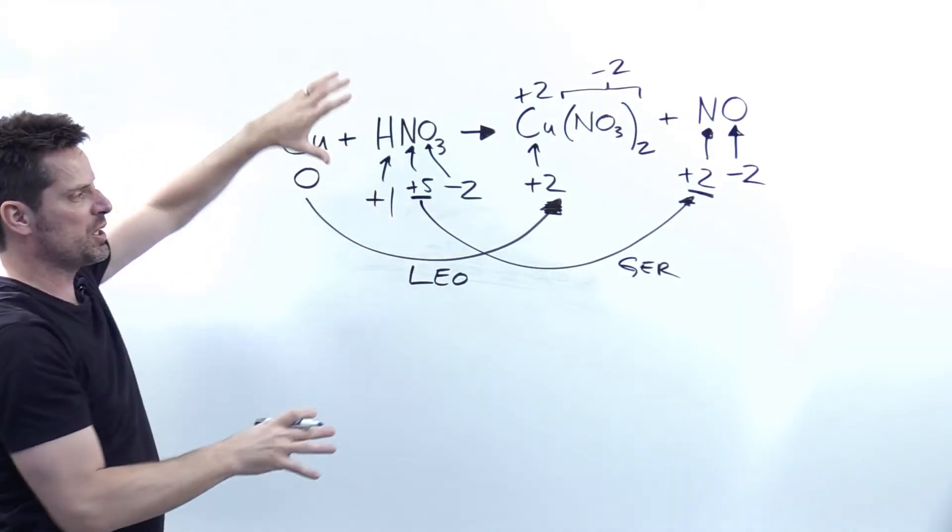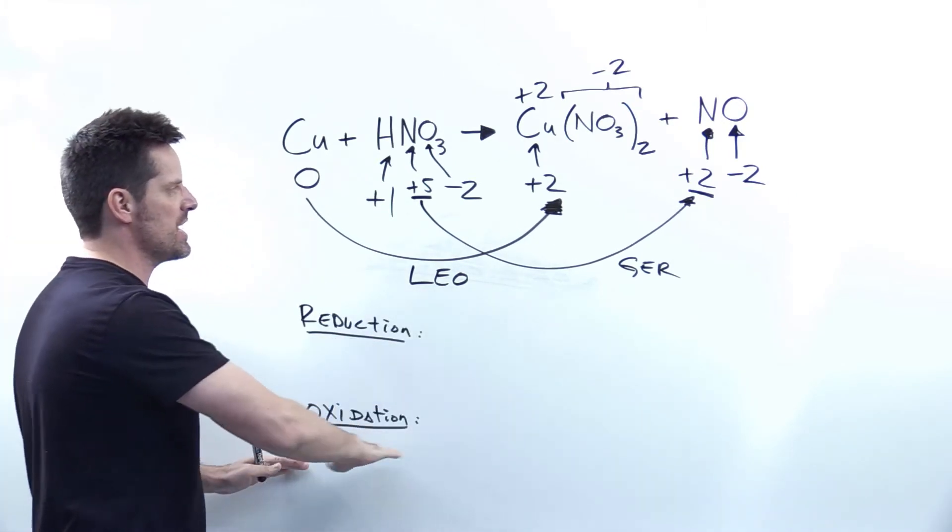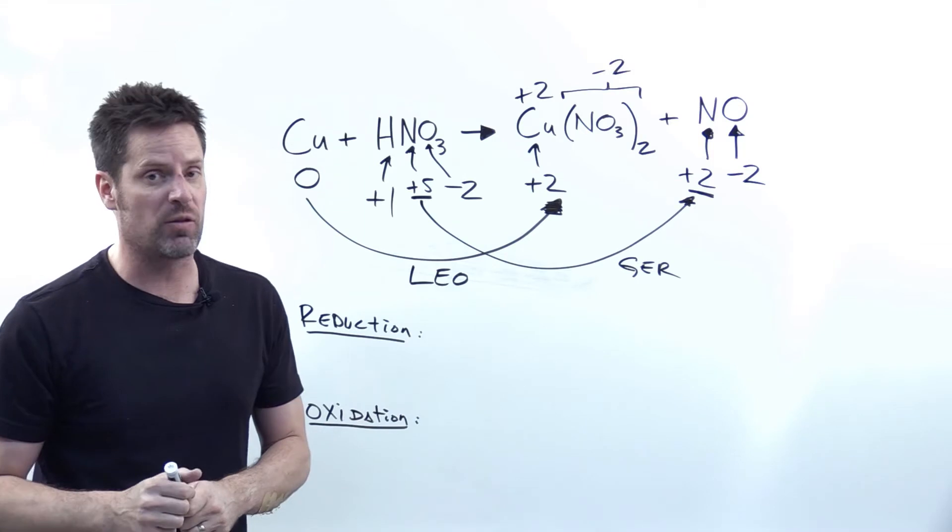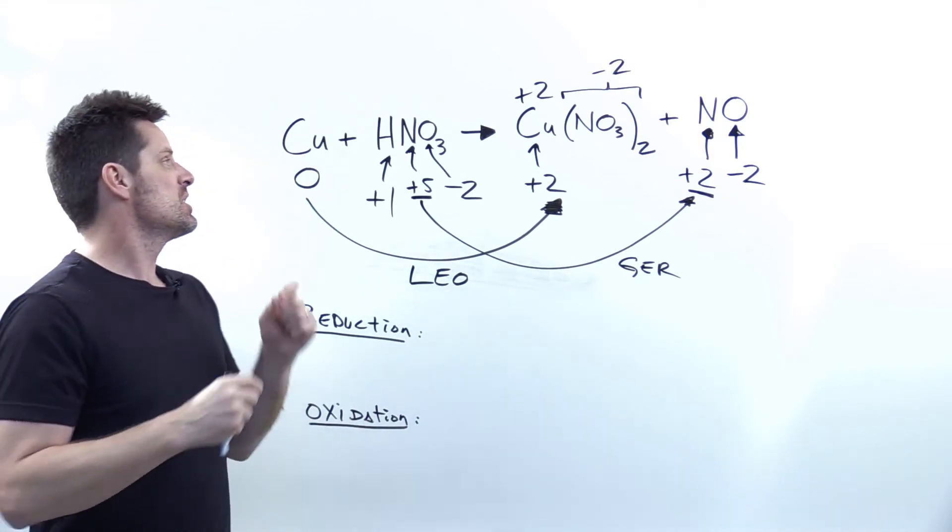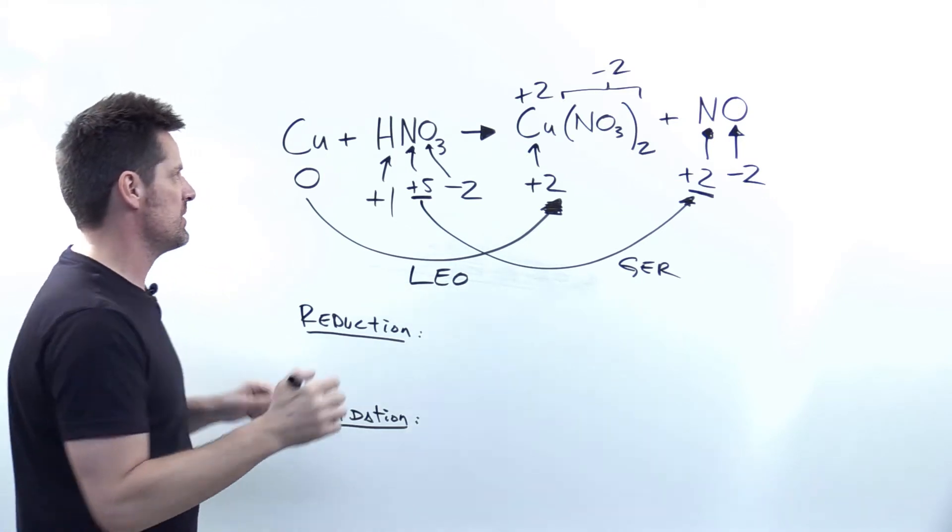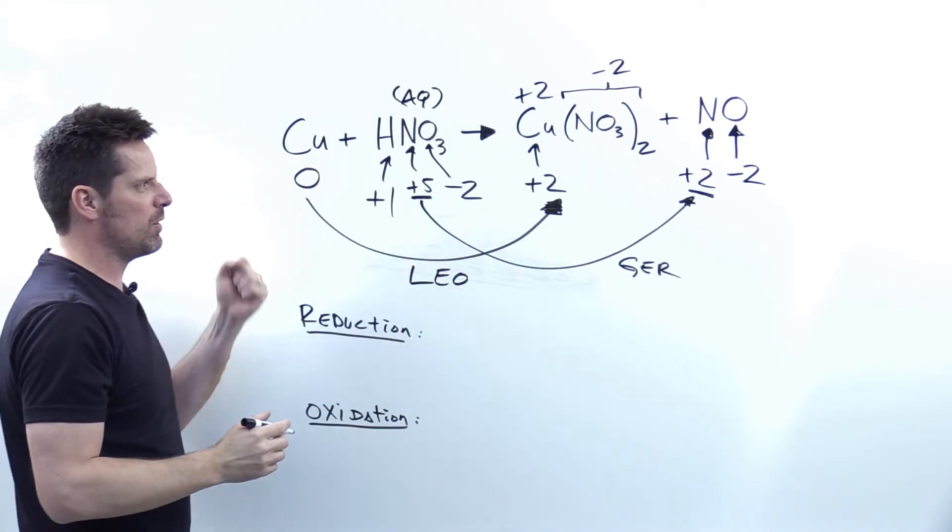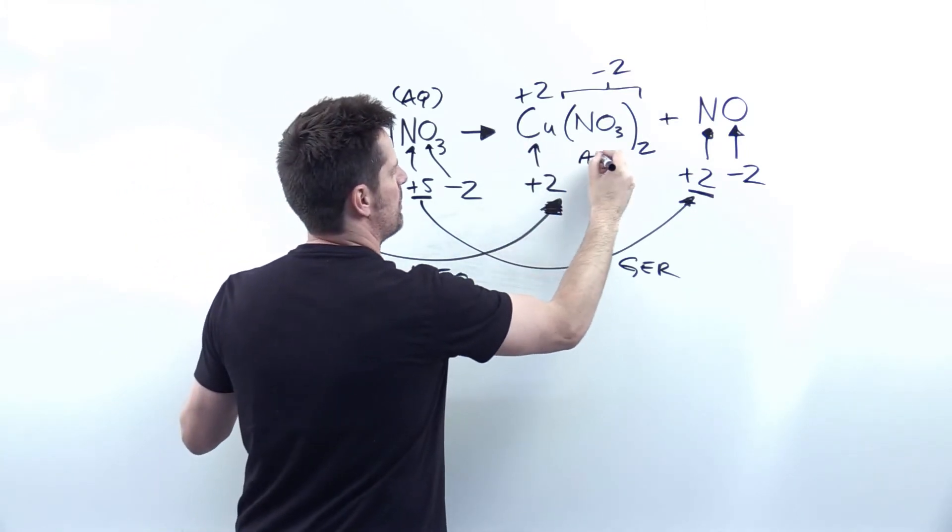So we're going to pull this reaction apart into two half reactions, the reduction reaction here and the oxidation reaction here. In doing that, however, we have to be careful by also splitting apart all of the species, separating cation from anion that are aqueous. And although I left it off the board, the original problem told us that the nitric acid is aqueous because it's a strong acid as is the copper nitrate.